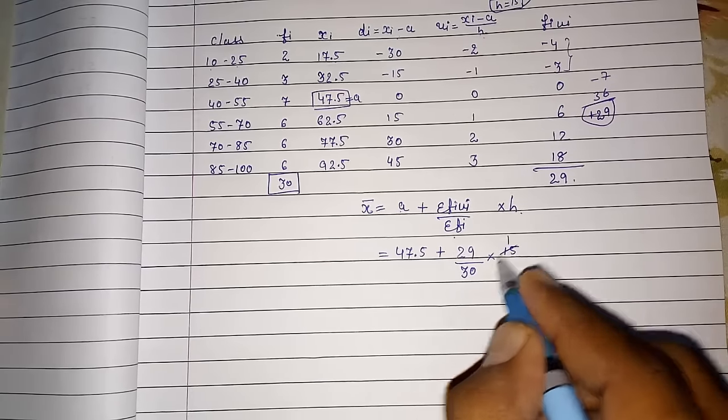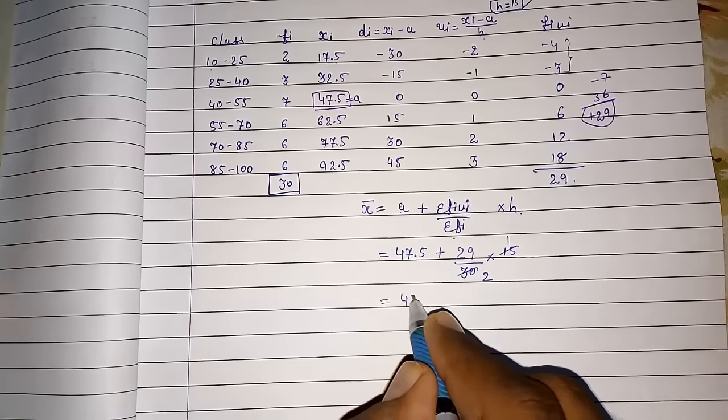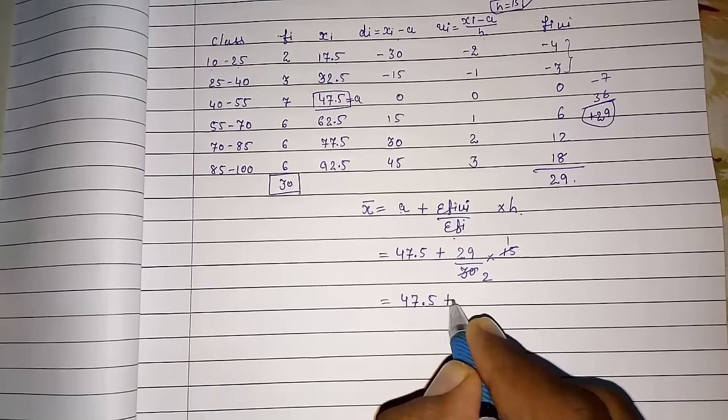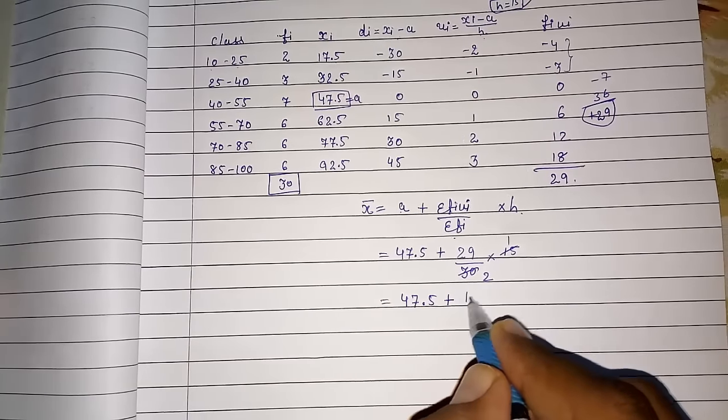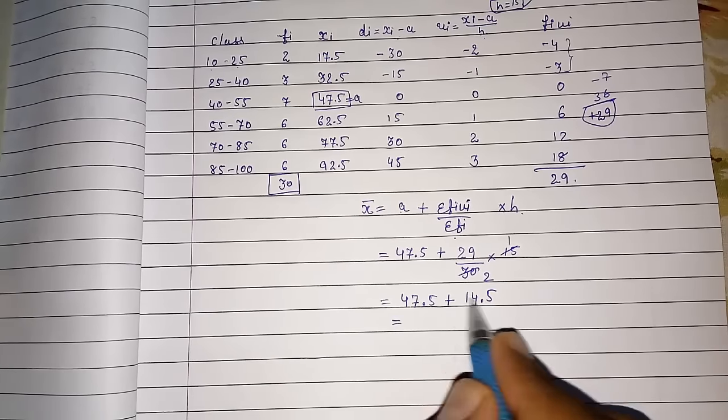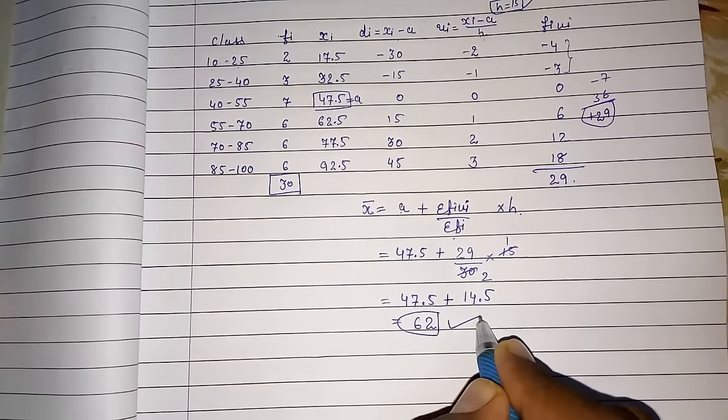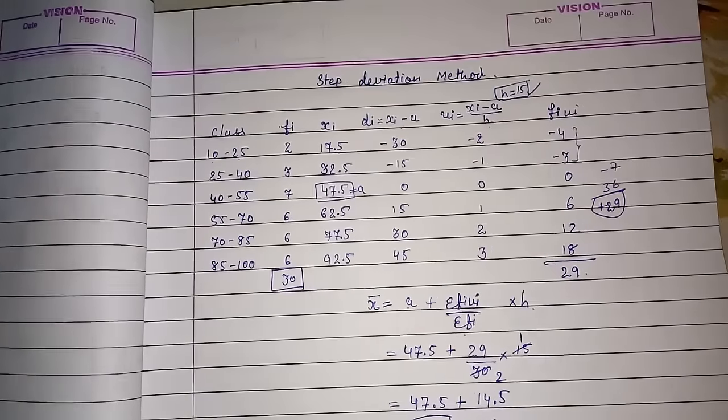So 15, 1, 2 and divide you will get 47.5 plus. So 29 by 2 means 14.5. Look here we are getting the same answer. So 0.8 and 12 carry 1 it's 62. Again the same answer by step deviation method.